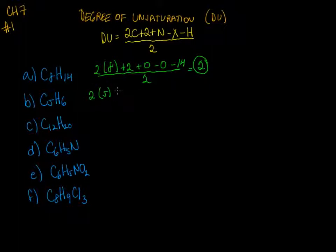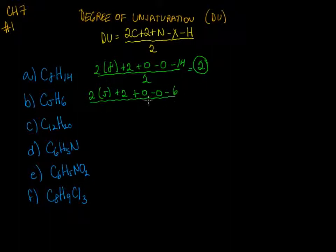For part B, I have two times five carbons, plus two, zero nitrogen, zero halogens, six hydrogens, and all of this is divided by two. What I get from this is three. So the degree of unsaturation is equal to the sum of the pi bonds or rings.